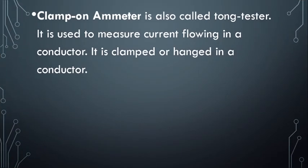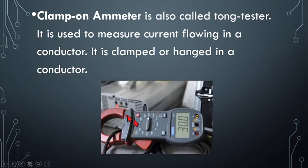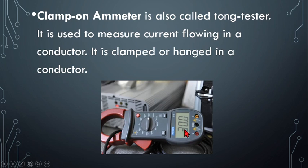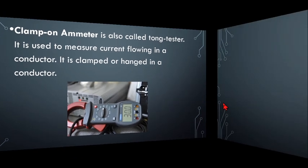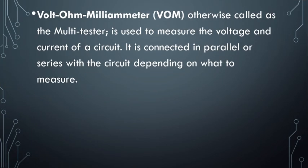Next we have the clamp-on meter, also called a tong tester, used to measure the current flowing in a conductor. It is clamped or hung on a conductor. This photo shows a digital clamp-on meter clamped on a wire with a reading of 30.0 amperes. There is also an analog type which has a scale and pointer.